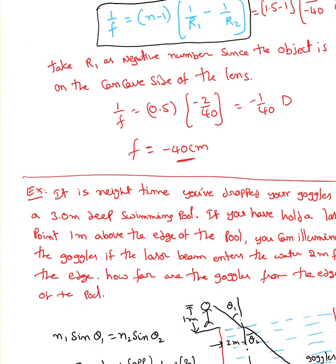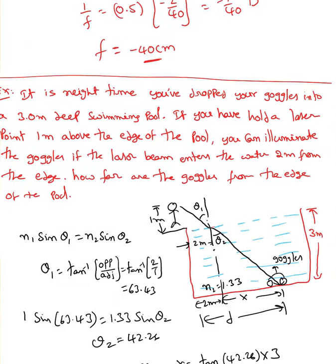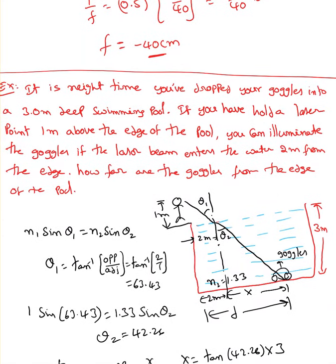The next example: it is nighttime and you have dropped your goggles into a 3-meter deep swimming pool. If you hold a laser pointer 1 meter above the edge of the pool and the laser beam enters the water 2 meters from the edge, how far are the goggles from the edge? This uses Snell's law plus trigonometry. The person is 1 meter above the ground, and the beam enters 2 meters from the edge.